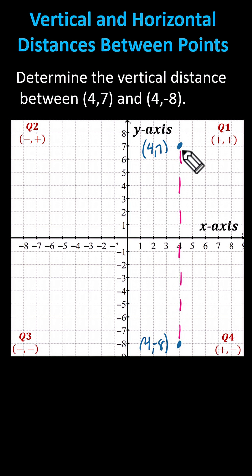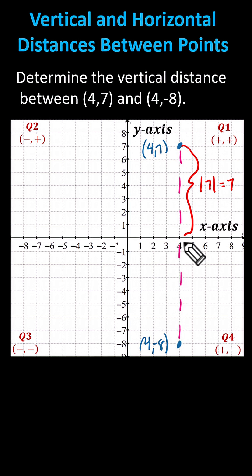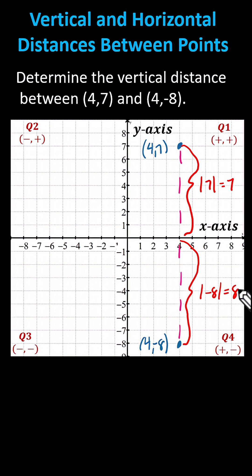Remember, the distance from the x-axis is controlled by y. This vertical distance is controlled by y — it's actually the absolute value of y, or in our case, the absolute value of seven, which is seven. And for the point four comma negative eight, this vertical distance is again controlled by y. It's the absolute value of negative eight, which equals positive eight.